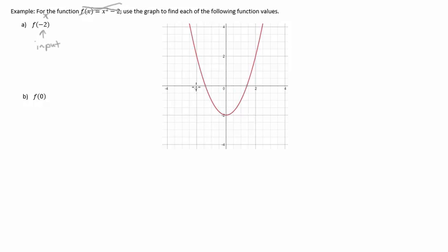So we look on our x-axis for negative 2, and then where negative 2 is, we go up to the graph and we say, okay, what value does that function have at x equals negative 2? It has a y value of positive 2, so that's our answer.